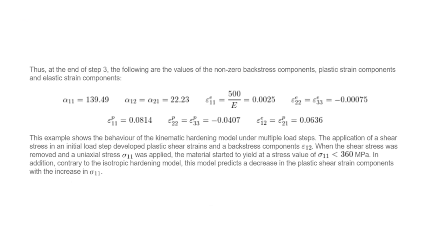At the end of the third step, the values of the back stress components and the elastic and plastic strain components are shown. Note that the yield surface moves in the stress space in the direction of loading, as evident by the increase of alpha₁₁. At the end of step 1, alpha₁₂ and alpha₂₁ were around 92, but loading in step 3 has caused these to decrease while alpha₁₁ increased. I suggest you try to solve this example yourselves and compare your results to the answers given online. Thank you.